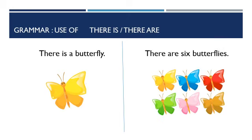Now there is one more example. There is a butterfly — there is a yellow butterfly. On the other side, there are six butterflies, or we can say there are some butterflies.